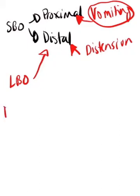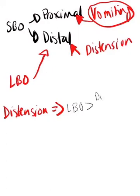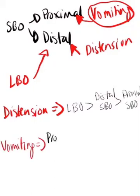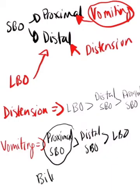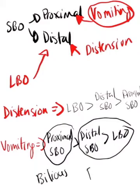To simplify: for abdominal distension, large bowel obstruction is worst, then distal SBO, then proximal SBO. For vomiting, it will be worst in proximal SBO, worse than distal SBO, and distal will be worse than large bowel obstruction. Proximal SBO is more likely to have bilious vomit, whereas distal SBO and large bowel obstruction will have fecalite vomit. Those are the key differences.